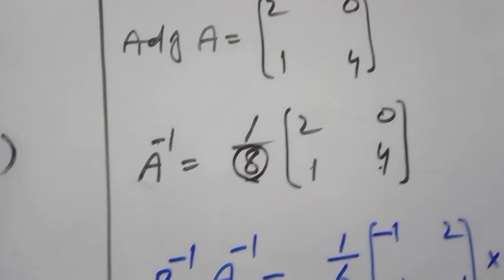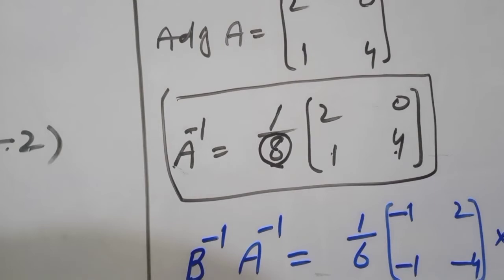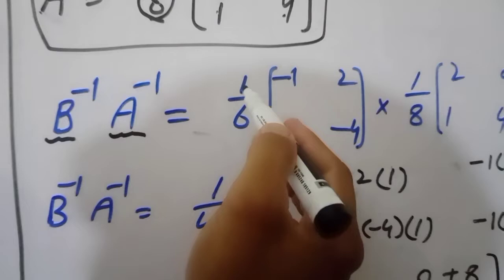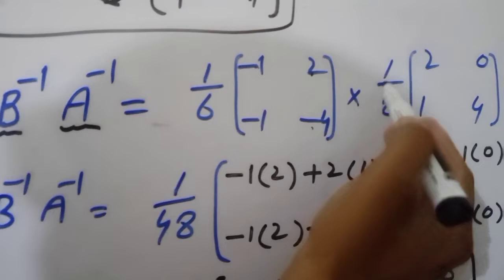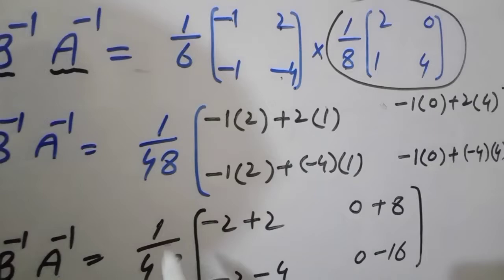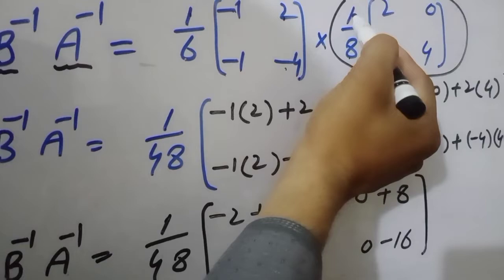Dear students हमने B inverse भी find कर लिया। यह A inverse है। अब हम इनको multiply करेंगे। तरतीब के लिहाज़ से पहले B inverse आएगा, फिर A inverse आएगा। B inverse की value: 1 over 6 × matrix [minus 1, 2, minus 1, minus 4]; multiply 1 over 8 × matrix A inverse. इस matrix के बाहर 1 over 6 है, इस के बाहर 1 over 8 है।